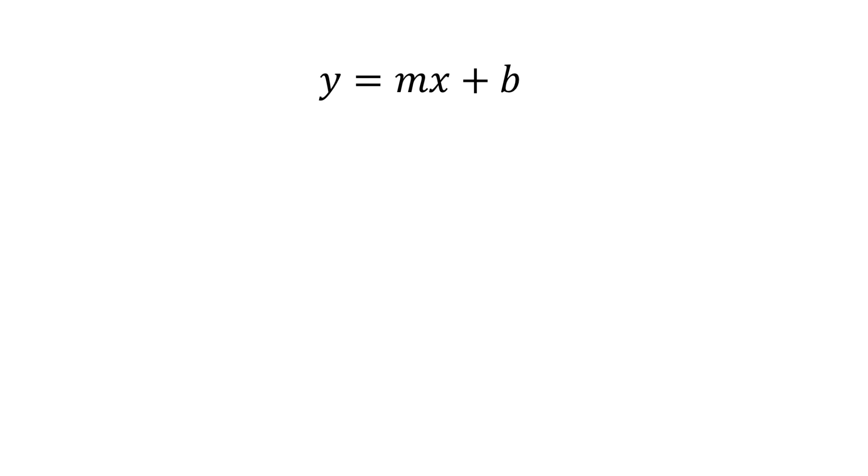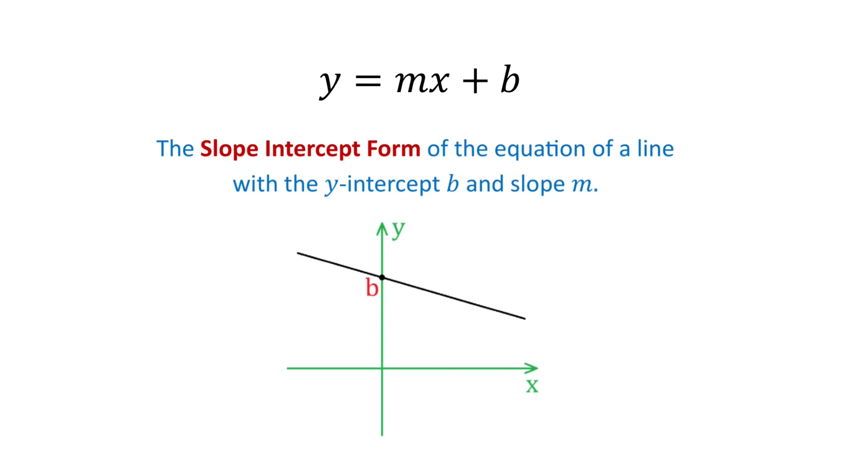And the last formula is y equals mx plus b. This is the slope-intercept form of the equation of a line with the y-intercept b and the slope m. Thank you for watching and please share in the comments what formulas you recognized and which ones were new to you.